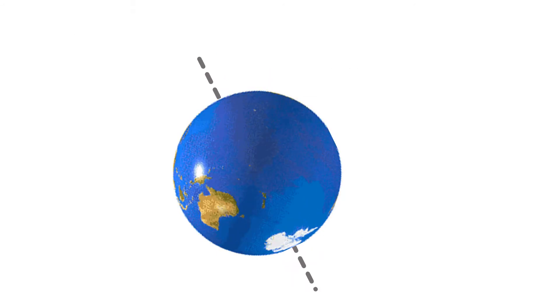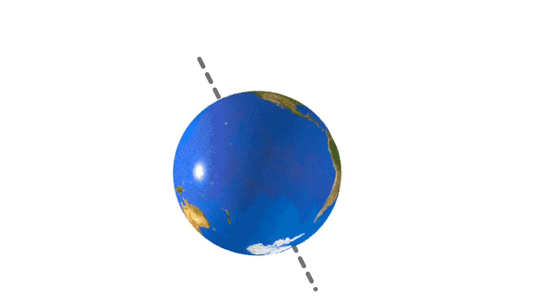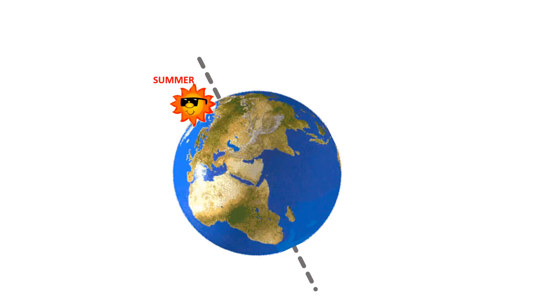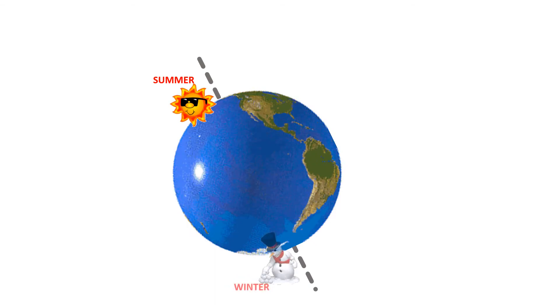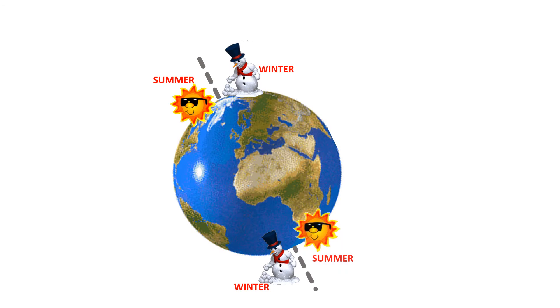The North and South Poles have only two seasons, summer and winter. If it is summer in the North Pole it is winter in the South Pole. If it is winter in the North Pole it is summer in the South Pole.